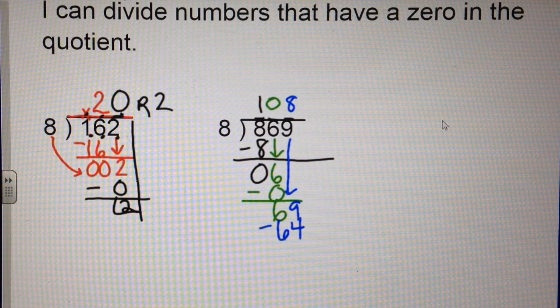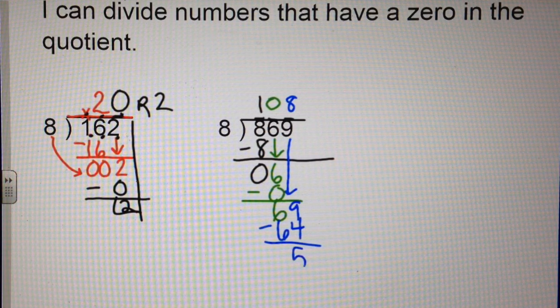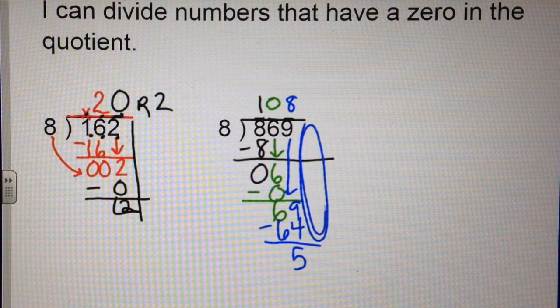So 8 times 8 is 64. Not less than, not more. 69 take away 64 is 5. I have nothing left to bring down.